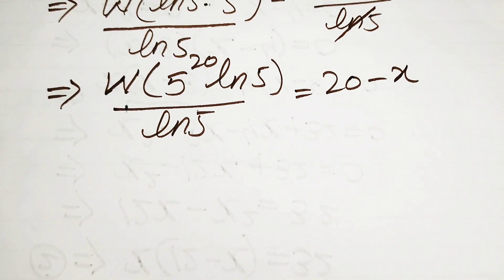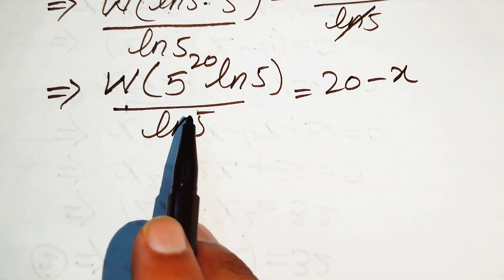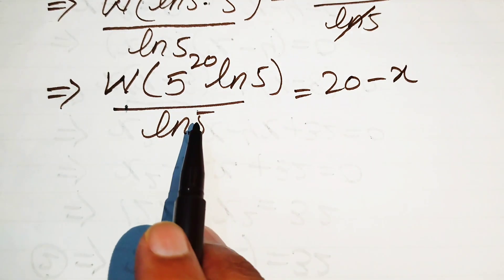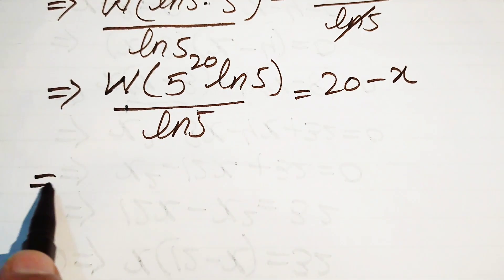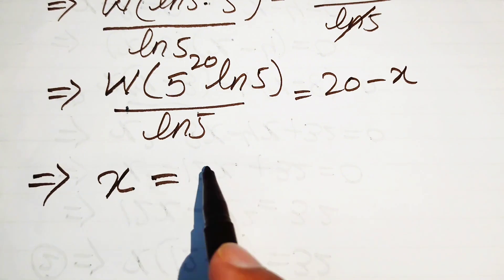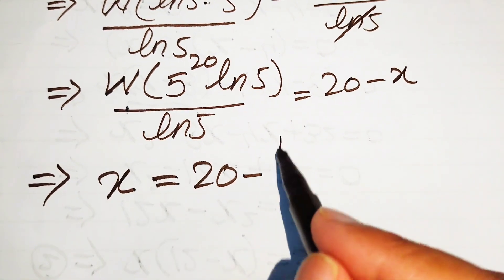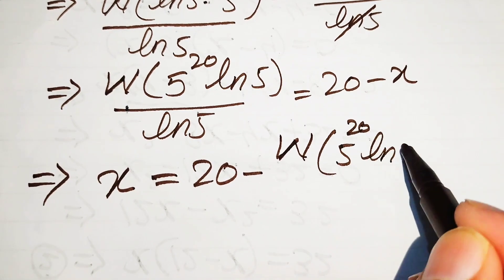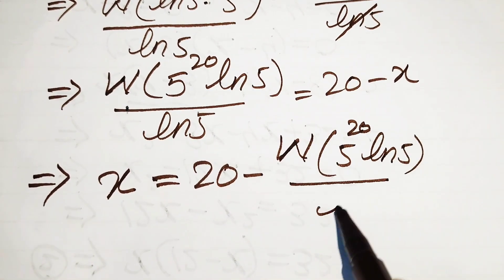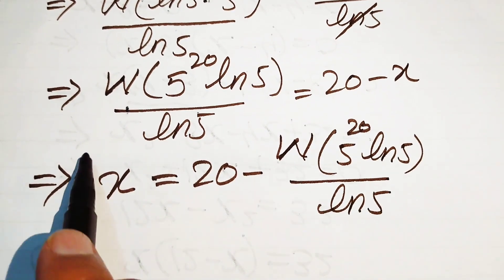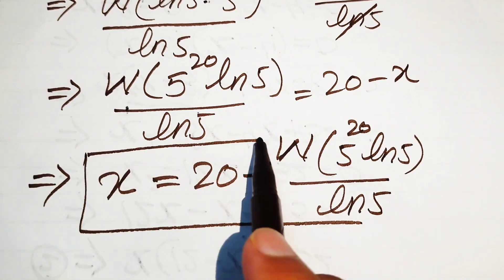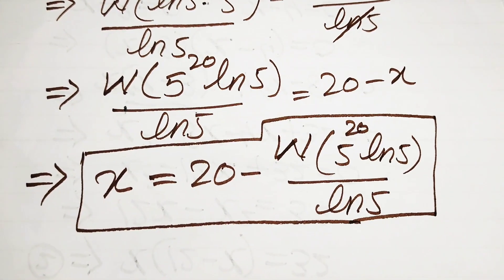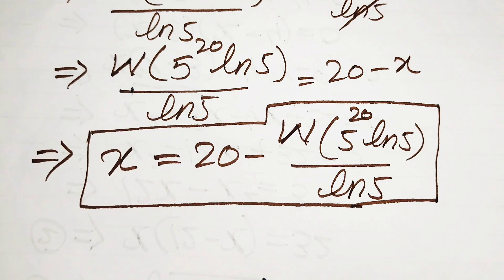We move the minus x to the left hand side and all other terms to the right hand side, giving us the final answer: x equals 20 minus W of 5 to the power of 20 times log 5 divided by log 5. This is the value of x and the final answer. Thank you so much for watching this video — please subscribe to my channel for more exciting videos.